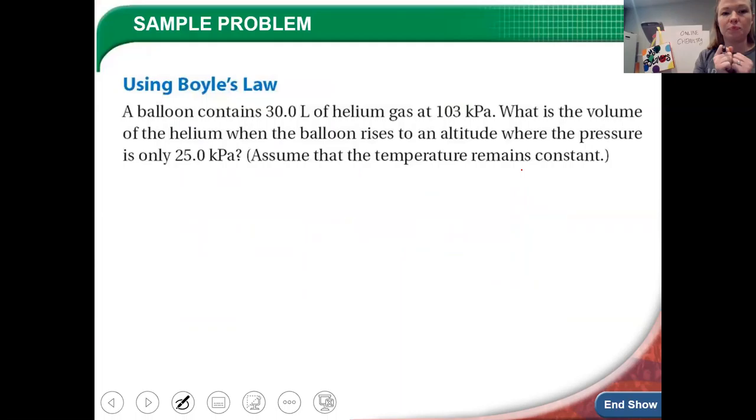So let's solve a problem here. A balloon contains 30 liters of helium gas at 103 kPa. What is the volume of the helium when the balloon rises to the altitude where the pressure is only 25 kPa? And if you remember what we talked about the other day, Mount Everest I think is about 32, it's in the 30s kPa. So this would be, this balloon would be at an altitude above that of Mount Everest.